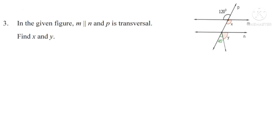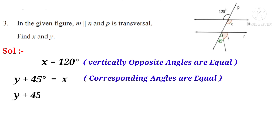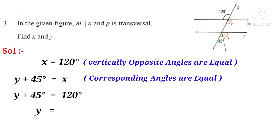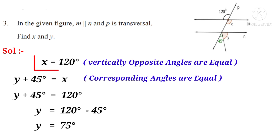Problem 3. In the given figure, M is parallel to N and P is transversal. Find X and Y. Solution: X equals 120 degrees because vertically opposite angles are equal. Y plus 45 degrees equals X because corresponding angles are equal; so Y plus 45 equals 120, giving Y equals 120 minus 45 equals 75 degrees. So X equals 120 degrees and Y equals 75 degrees.